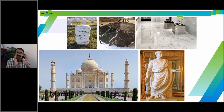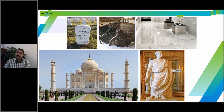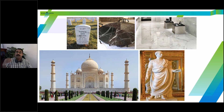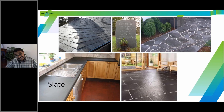Marble has many uses: tombstones, furniture, flooring, and sculpture are all made of marble. The Taj Mahal — the seventh wonder of the world, located in Agra, India near New Delhi — is made of white marble. However, due to acid rain, it is turning yellowish. Marble is made of calcium carbonate, so acids can eat it away, even though it's a tough metamorphic rock.